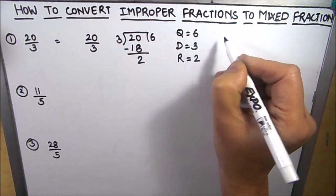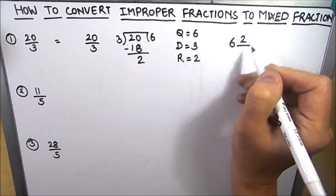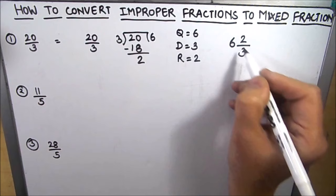So in mixed fraction form we write the quotient first, then we will write the remainder on the numerator, which is 2, and divisor in the denominator. We are left with 6, which is the quotient, 2 over 3, remainder over the divisor. So this is our mixed fraction.